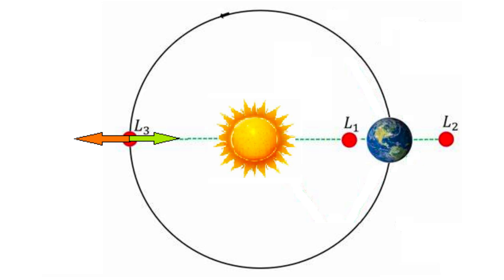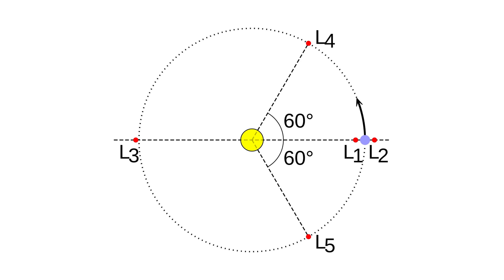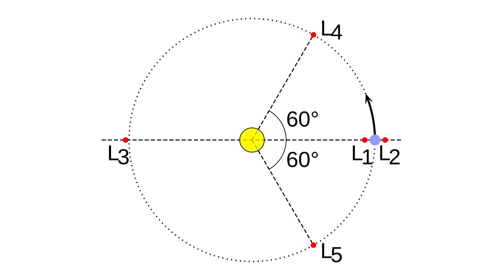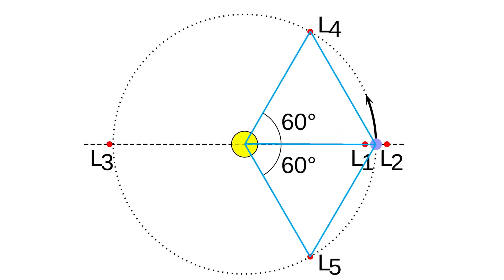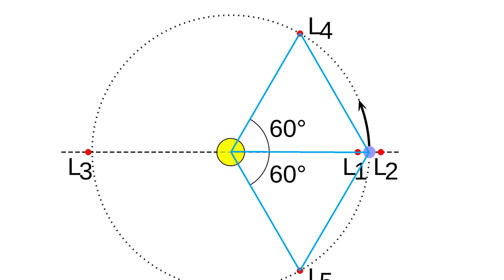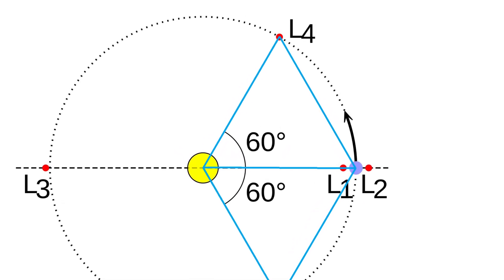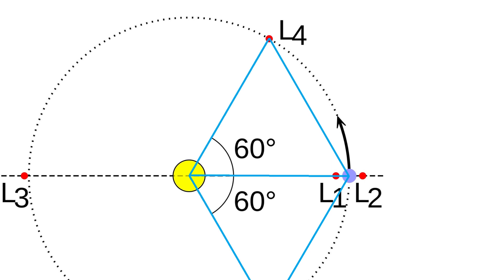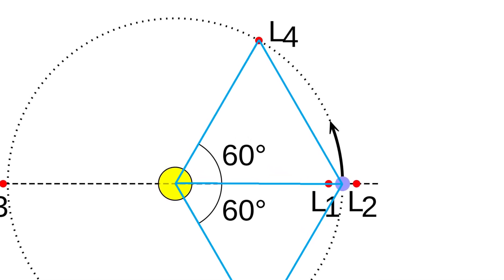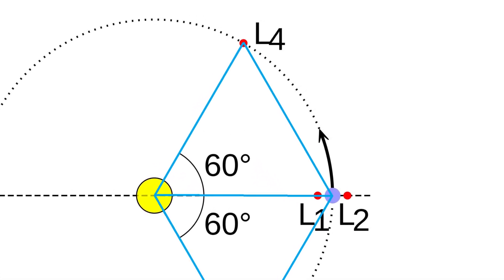The remaining two points, L4 and L5, are called triangular points. Together with the massive bodies, they form two equilateral triangles and are 60 degrees ahead or behind the Earth's motion in orbit. It might seem that this configuration creates equilibrium since, at the vertices of the triangle, there are very different masses.